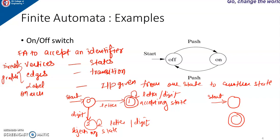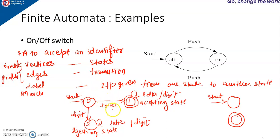This is how a finite automata will be. It will have some finite number of states, one start state, and at least one final state. There will be some input given — that is the action — and based on the action the machine will decide what the transition from one state to another will be, decided by the input given to that particular state. Hope you have understood what is finite automata.